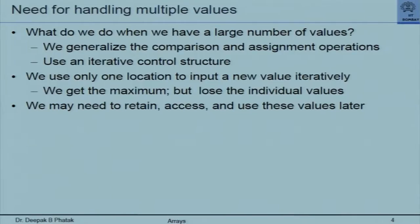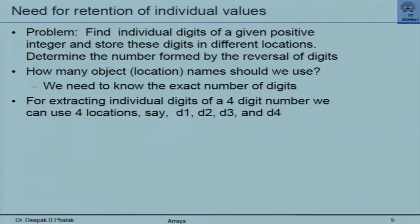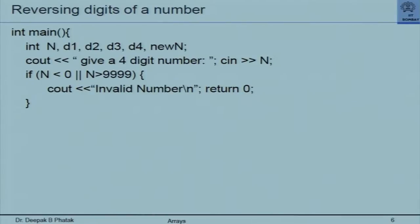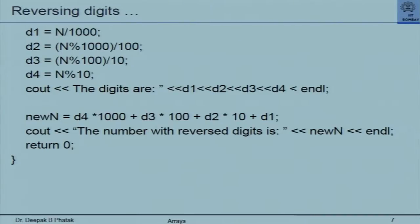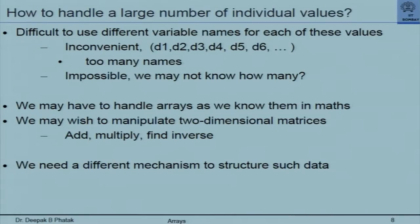Basically, we say that you need to handle multiple values, and the problem is discussed in the context of identifying individual digits of a number. This is a standard problem. Suppose a number is a 9-digit number — then you will require variables like d1, d2, d3, d4, d5, d6, d7, etc., and that is cumbersome. This is a simple problem of reversing the digits which people can understand, but it is difficult to use different variable names, and that is the motivation for an array.